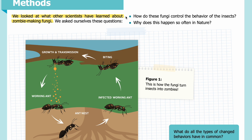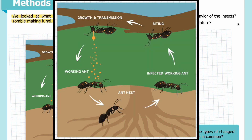We looked at what other scientists have learned about zombie-making fungi and asked: how do these fungi control the behavior of the insects, and why does this happen so often in nature? In figure one, you can see how the fungi turn insects into zombies. Going counterclockwise starting at the working ant in the nine o'clock position: a working ant gets infected by spores, then travels to the ant nest underground. The infected ant then climbs upward and shows a behavior called biting, allowing it to stick to branches or leaves. Then the fungal spores grow and transmit themselves, spreading the fungus to more working ants.